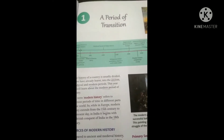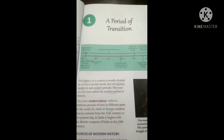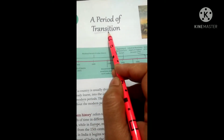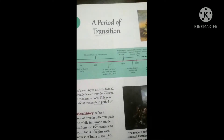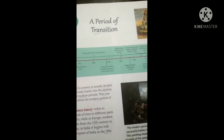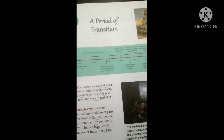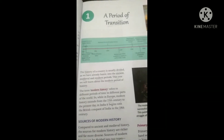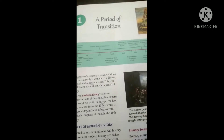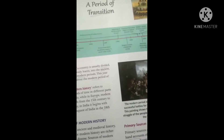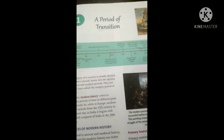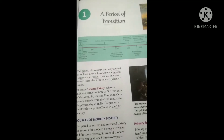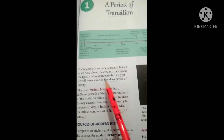This chapter is called 'A Period of Transition.' Transition means transfer — when we move from one period to another period, when we shifted from one period to another, that is called transition. In this chapter we will read how the world transferred from the medieval period to the modern period, what was the reason behind it, what was the impact, and what are the features of the modern period of history.